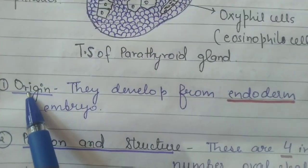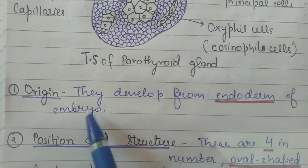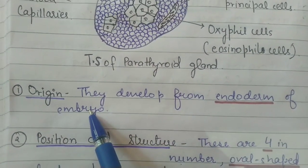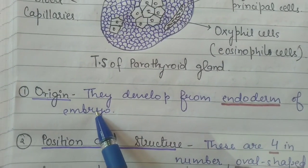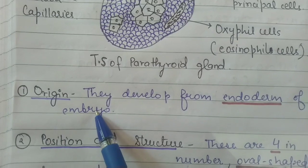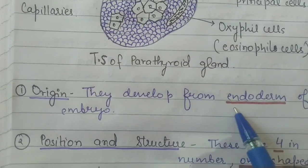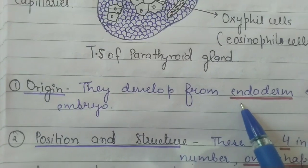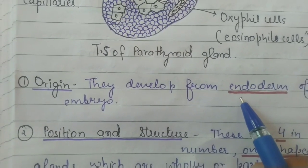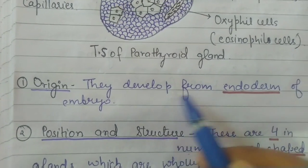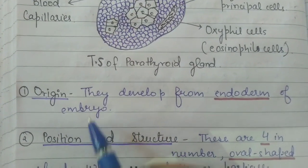If we see their origin, they have developed from the endoderm of the embryo. We know that there are three germ layers: ectoderm, endoderm, and mesoderm. The parathyroid glands develop from the endoderm, just like the thyroid glands, which also develop from the endoderm of the embryo.